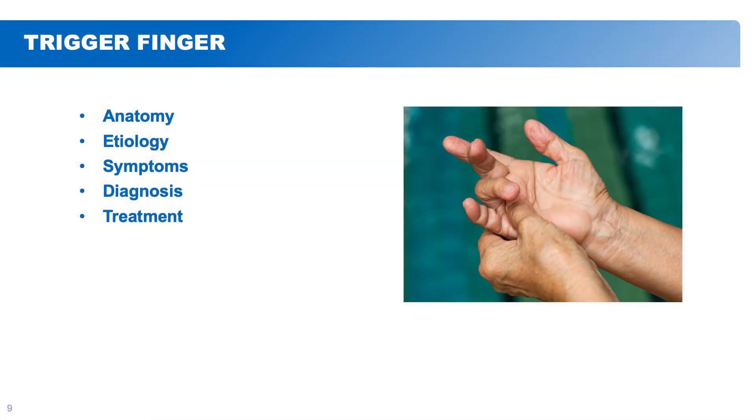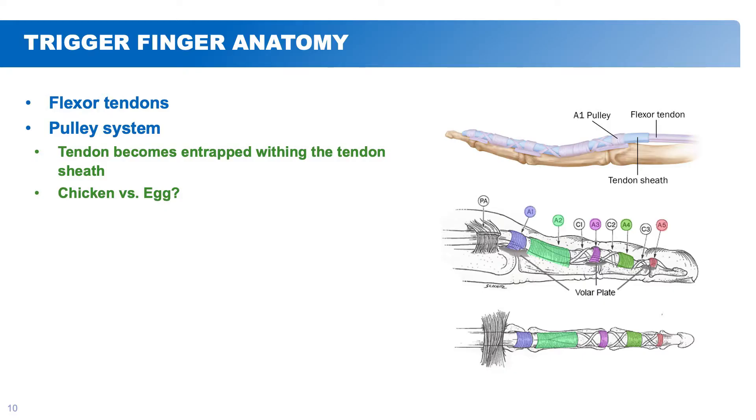The next most common cause of hand and finger pain is trigger finger. Again, we'll talk about anatomy, etiology, symptoms, diagnosis, and treatment. The flexor tendons are essentially like ropes connecting muscles to fingertips, allowing fingers to bend. They are surrounded by a pulley system — small tunnels through which the tendons travel. If there's any inflammation around there, it can cause dysfunction of the flexor tendons. The question is what happens first: is it a tendon issue or a pulley issue? The pulley can become fibrotic and stiffened, or inflammation around the tendons can prevent them from gliding smoothly through the pulleys.